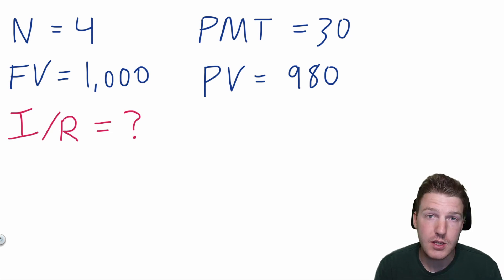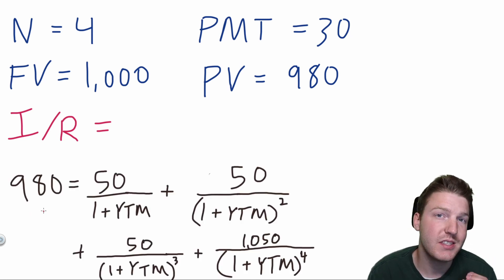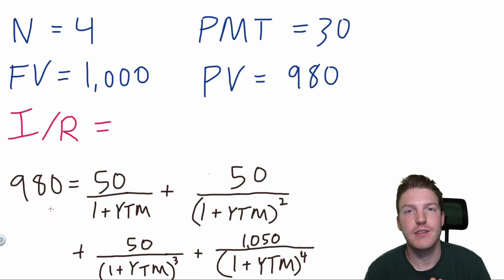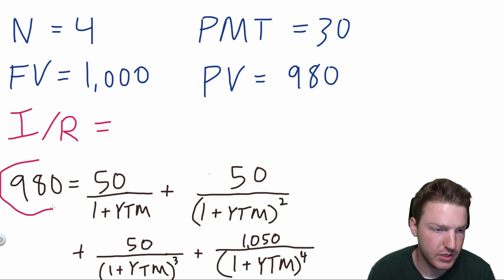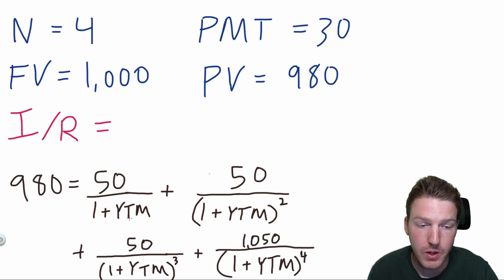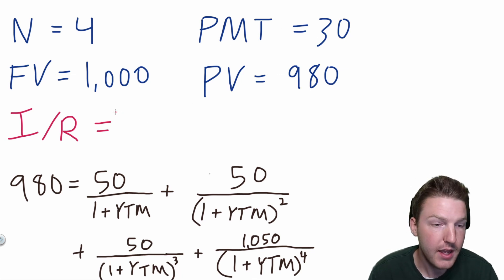You're basically going to need to plug all these four inputs into a financial calculator to do that. But you can see how it looks with this formula right here. At the bottom, we have the same formula we use when calculating bond price. But now we know bond price, which is $980. What we don't know is the yield to maturity, which is used to discount the cash flows. But we can find that by plugging all four of these inputs at the top of the screen into a financial calculator, and then computing for I over R.